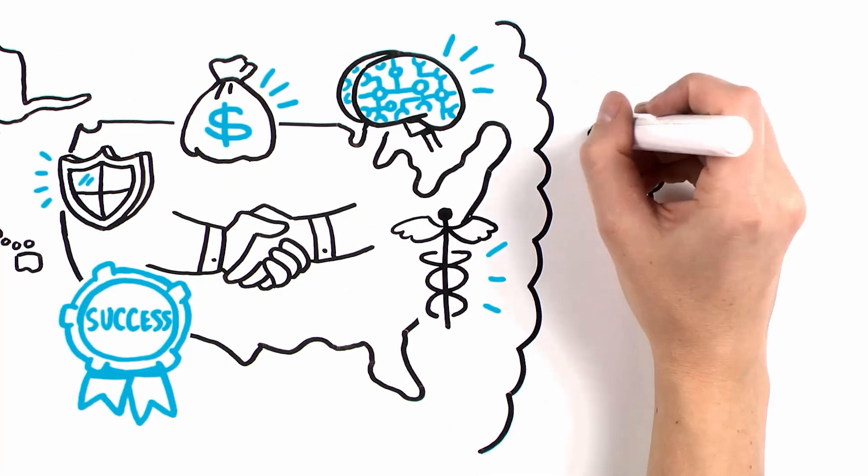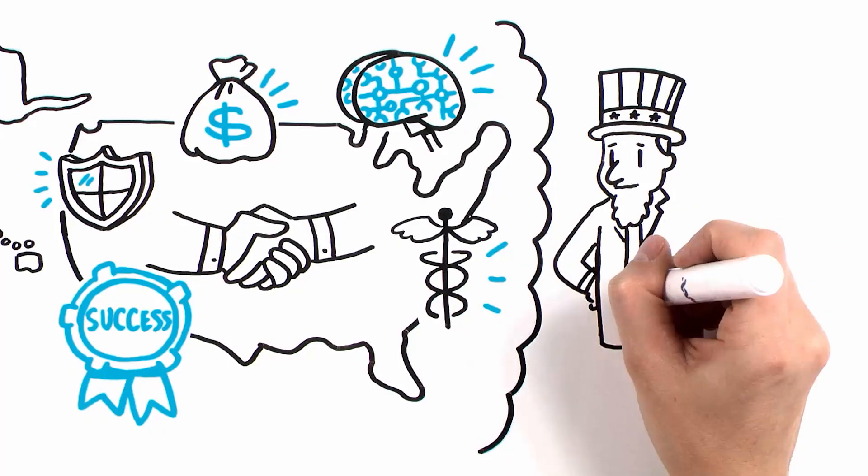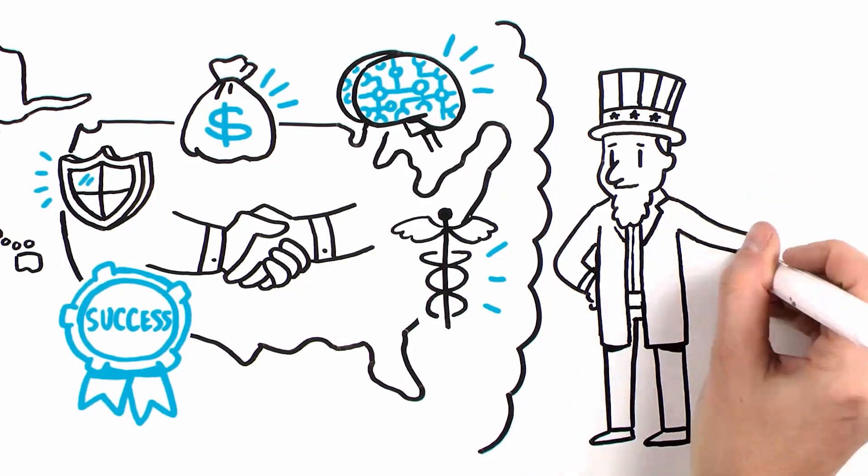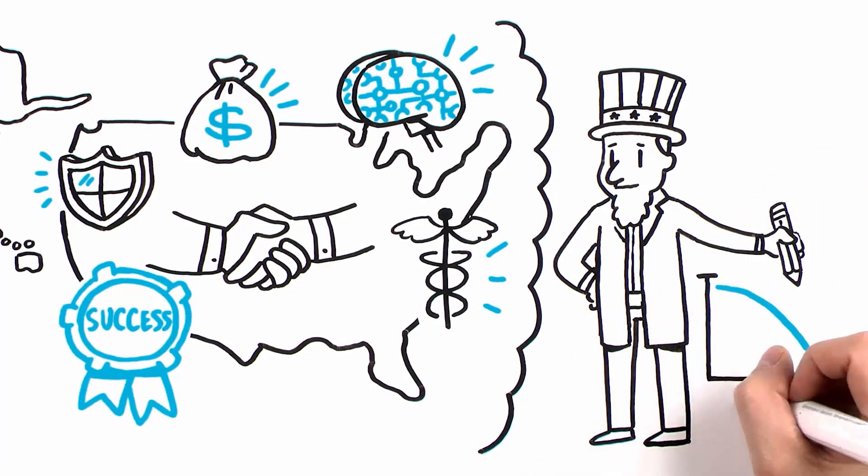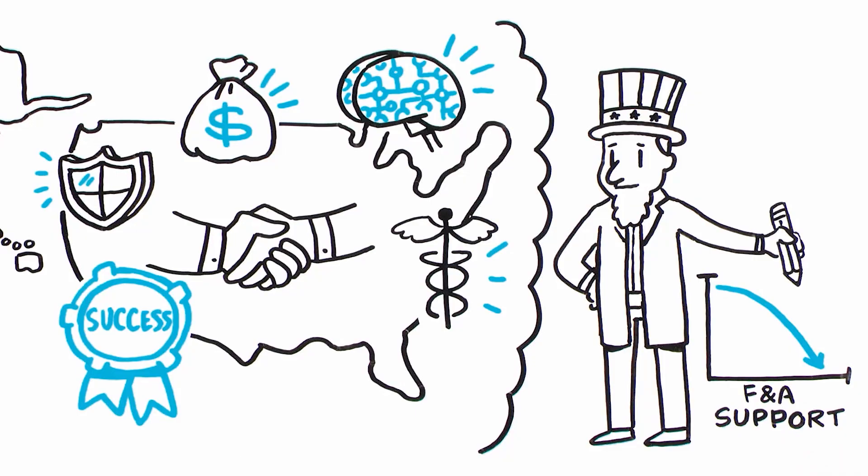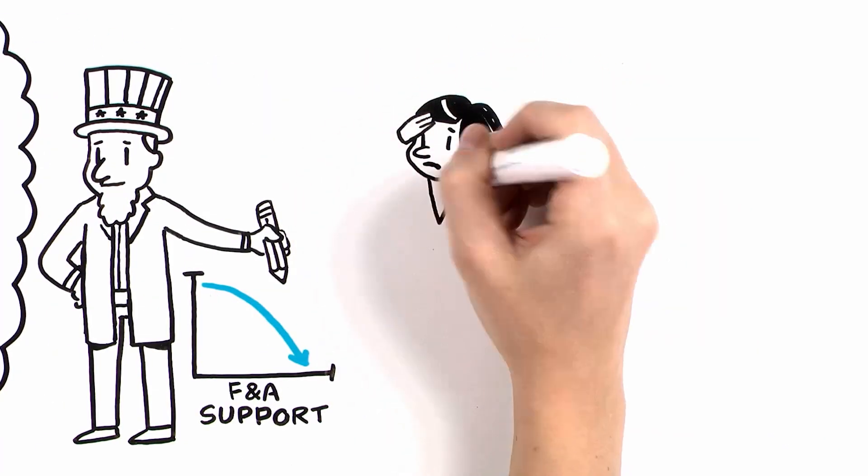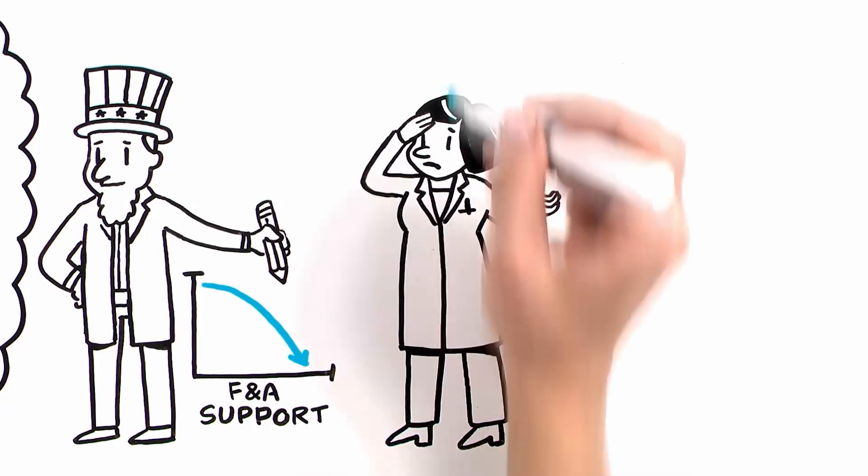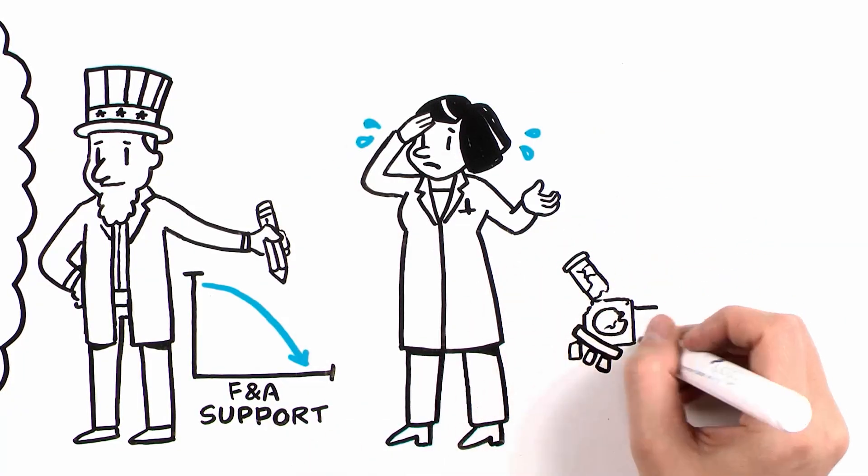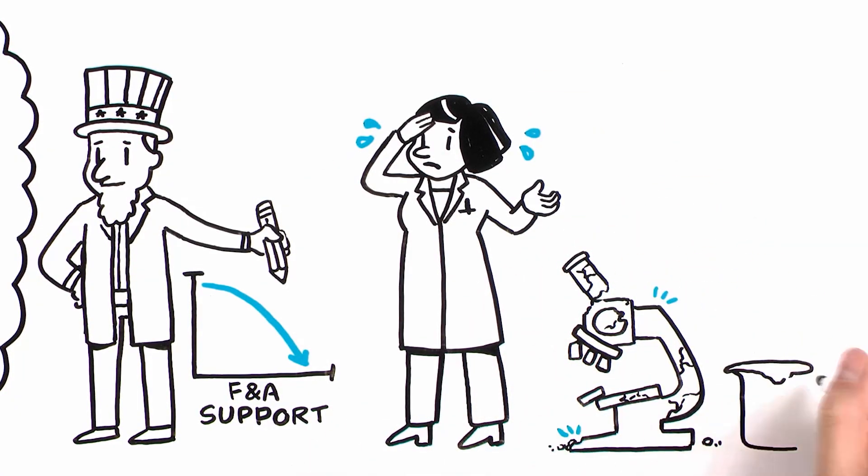Despite the long-standing success of this partnership, some in Washington want to significantly reduce the federal government's role in funding F and A costs. Proposals to further reduce or cap F and A cost reimbursement would directly hurt faculty and trainees and significantly harm institutions' ability to advance important discoveries.